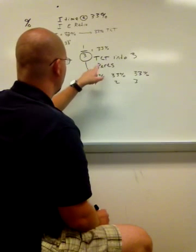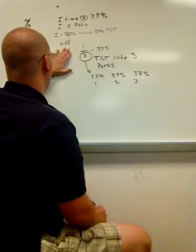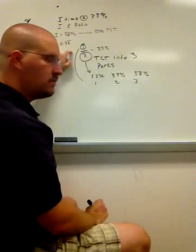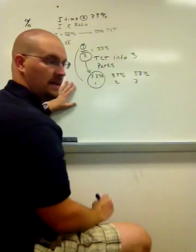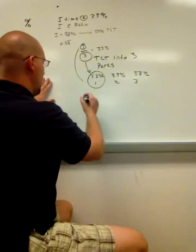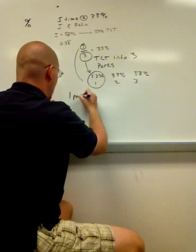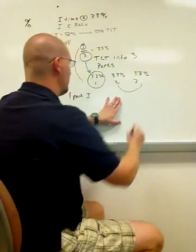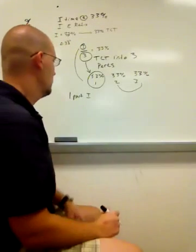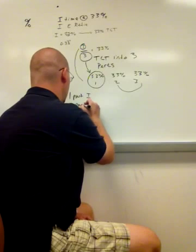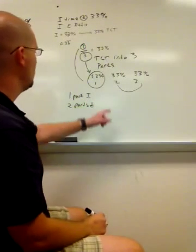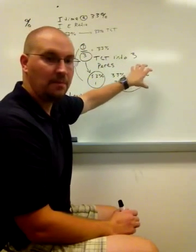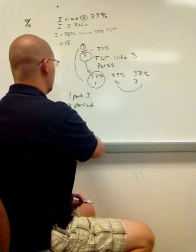And then I go, my total cycle time is broken into 3 parts. 1 part must be my I time. So I'm going to take one of these 33% and make that my I time. So 1 part I, and what do I have left over? I have these other two 33s left over. So 2 parts E. So my I to E ratio is 1, there's my 1/3, to 2, whatever's left over for my E part. Hopefully that makes a little more intuitive sense.